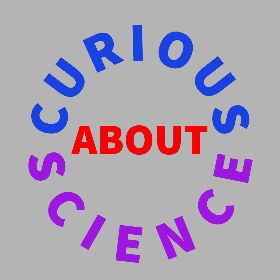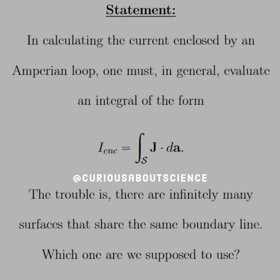We have a pretty quick problem with a very delightful answer, so let's get to it. The statement reads: in calculating the current enclosed by an Amperian loop, one must in general evaluate an integral of the form I enclosed equal to the surface integral of j dot dA, which is the cross-sectional area of the volume current density. The trouble is, there are infinitely many surfaces that share the same boundary line. Which one are we supposed to use?